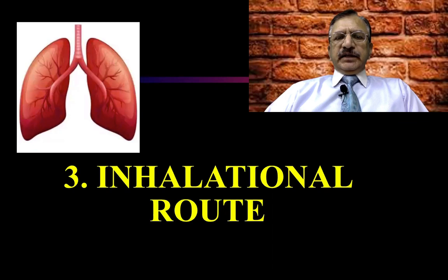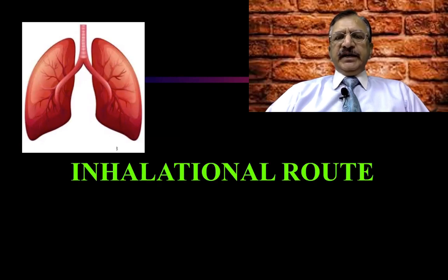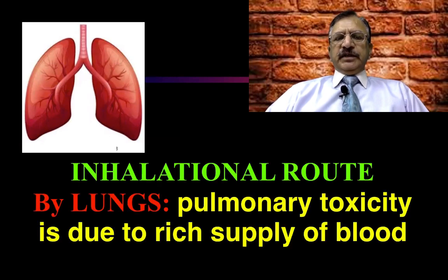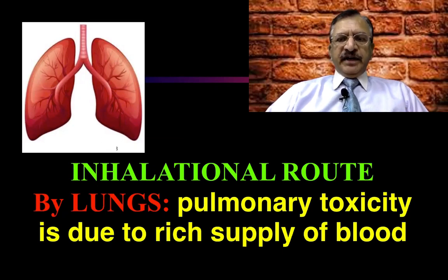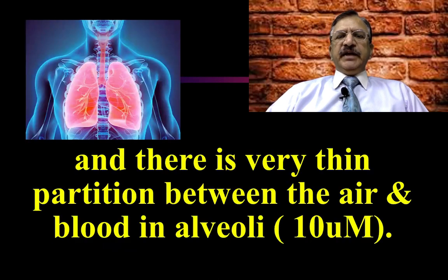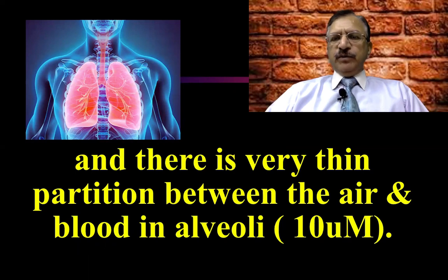Then the inhalation route: there are certain poisons which are inhaled and get absorbed. The lungs have pulmonary toxicity because they have a rich blood supply. There is a very thin partition between the air and the blood in the alveoli — that is 10 micrometers.